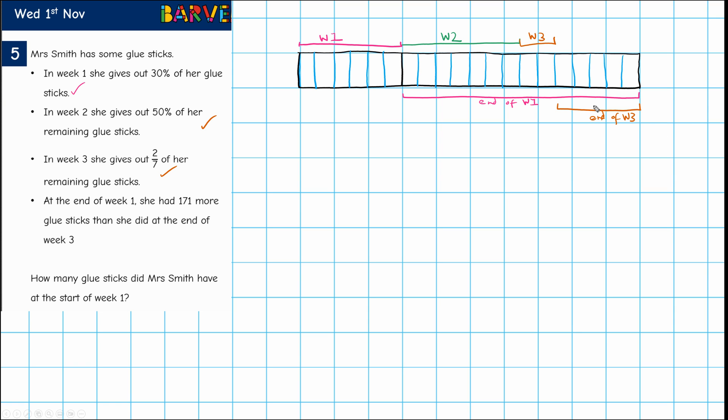Let's just draw it on here. We are told that at the end of week one she had 171 more glue sticks than the end of week three. That means that the difference between these two lengths is equivalent to 171. So the difference here is 171.